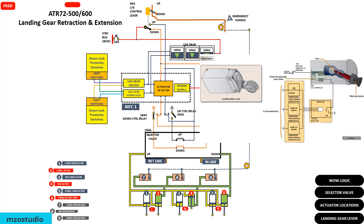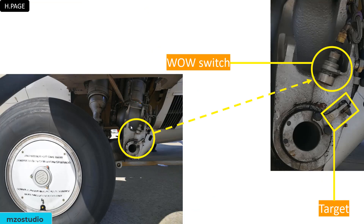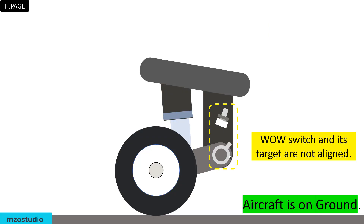This is the logic located on the landing gear, calculated by the MSC. This is the proximity switch target. When your aircraft is in flight, the proximity switch and target are in line — in this condition the MSC understands the aircraft is in flight. When your aircraft is on ground, the target and switch are aligned differently.